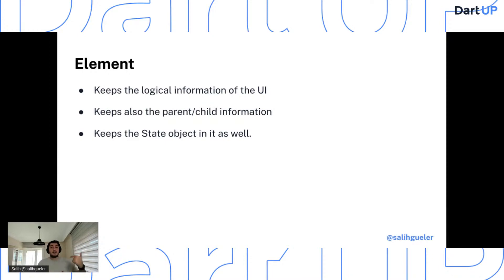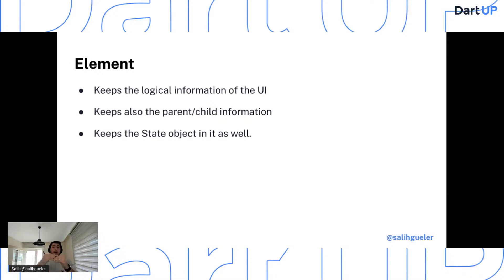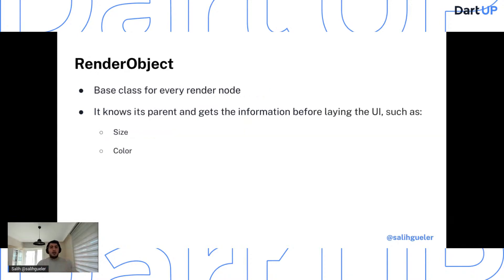Unmatched children are discarded and rebuilt from scratch, while matched children are built with new configurations. In simpler terms: element compares the previous and new versions — if the type is the same it reuses the object; if the type has changed it creates a new one. This way element does the heavy work of keeping heavyweight objects to show the UI or maintain information about it.